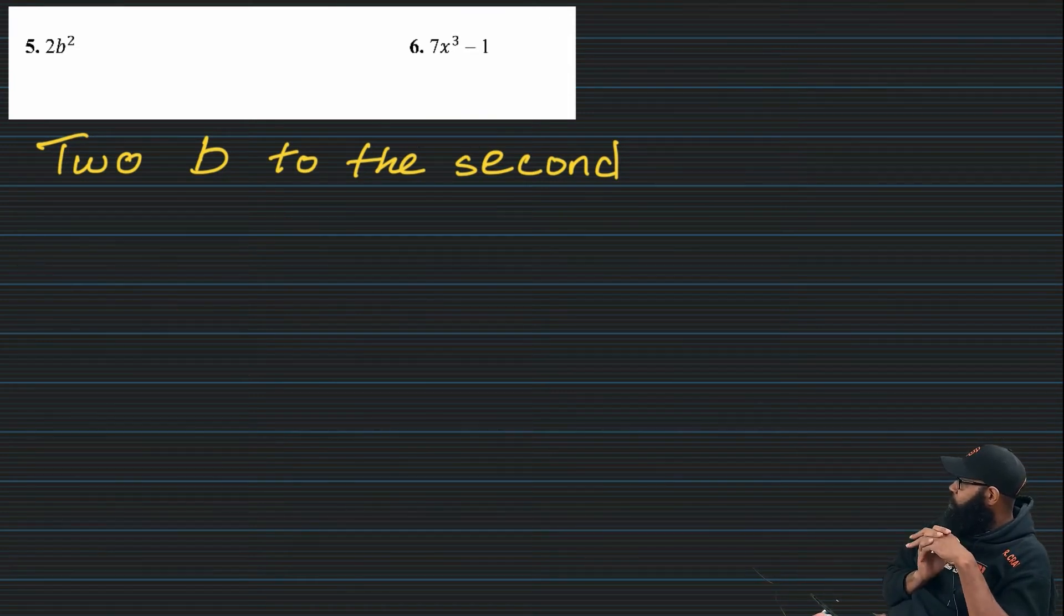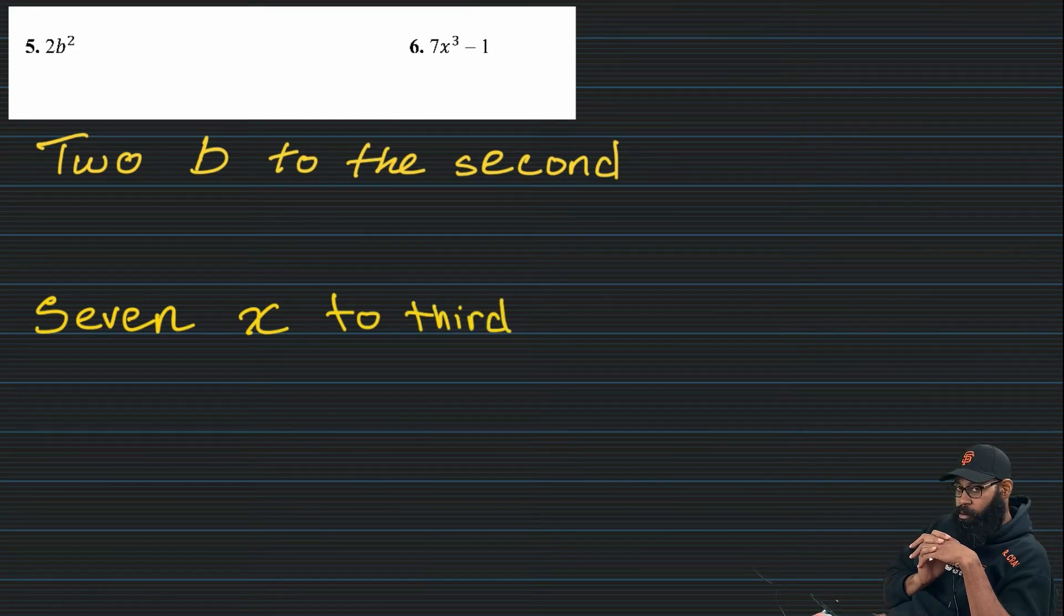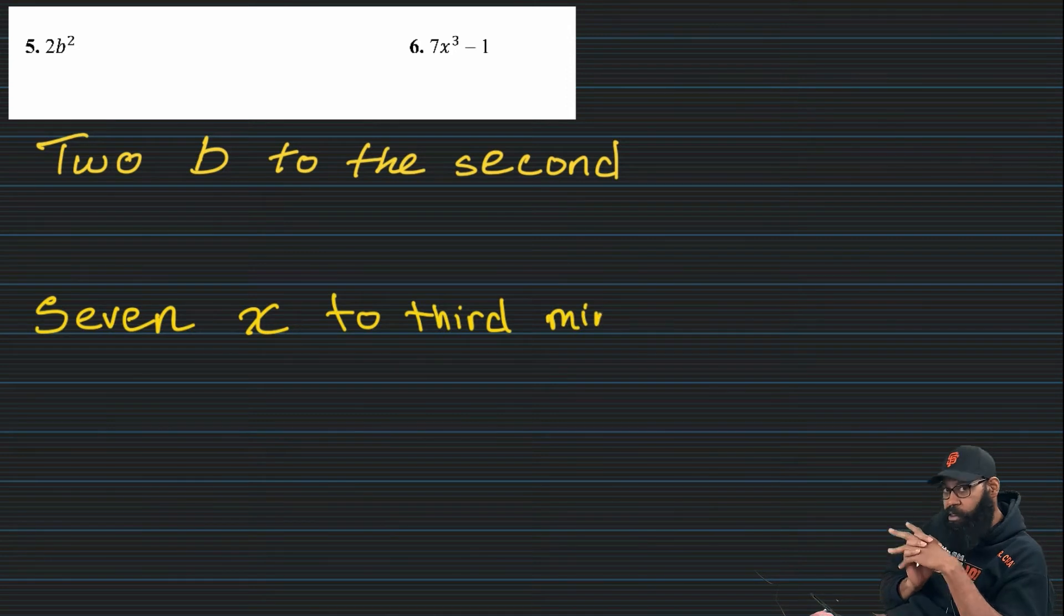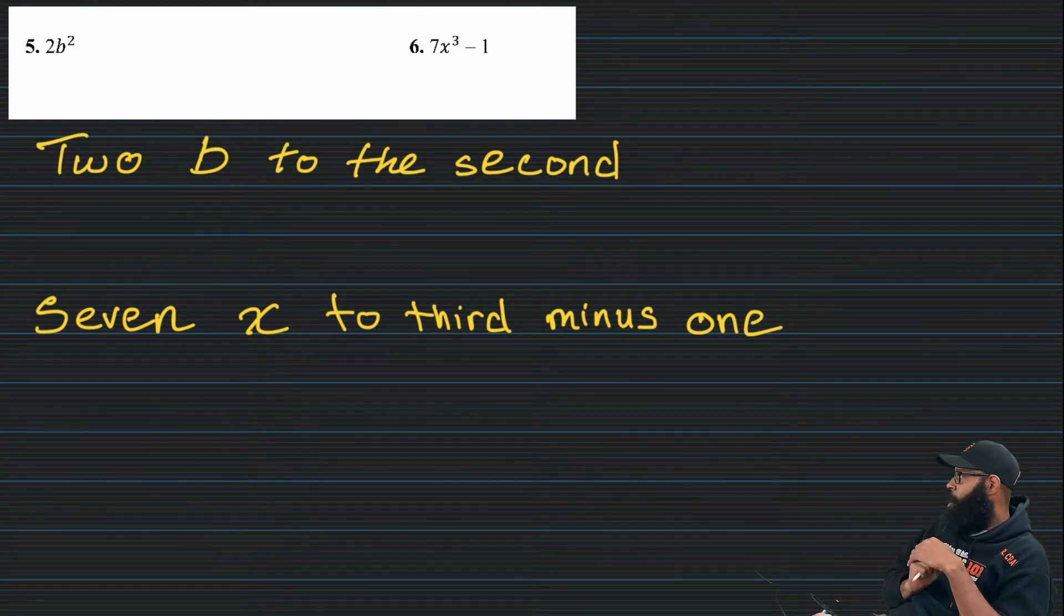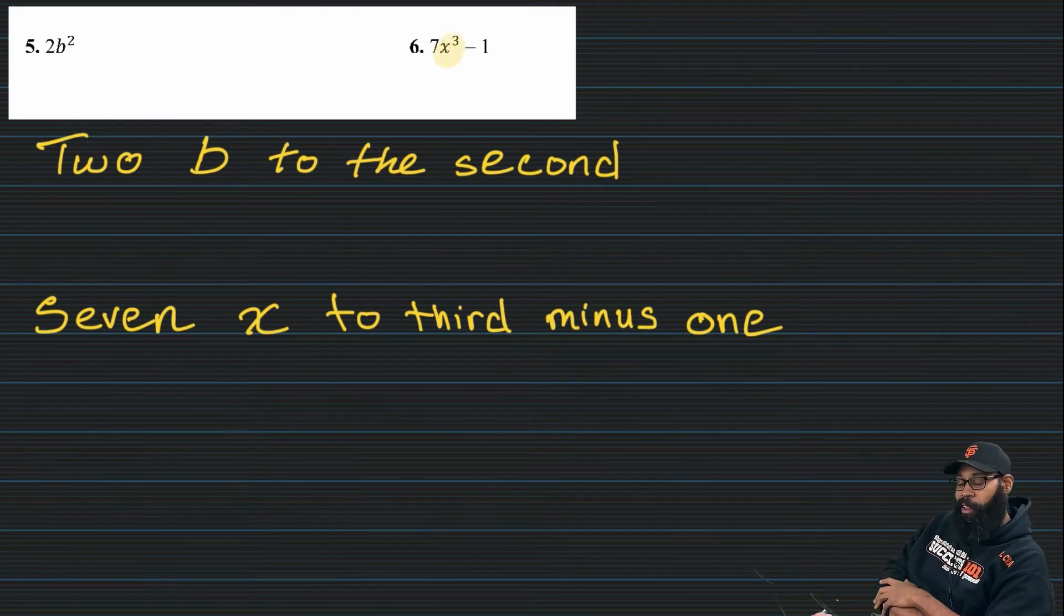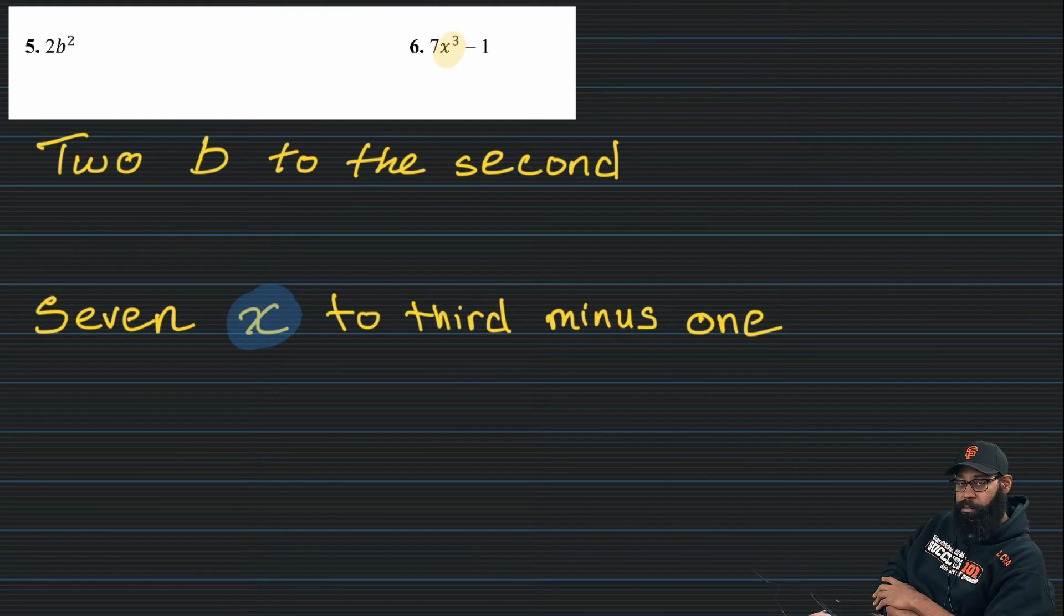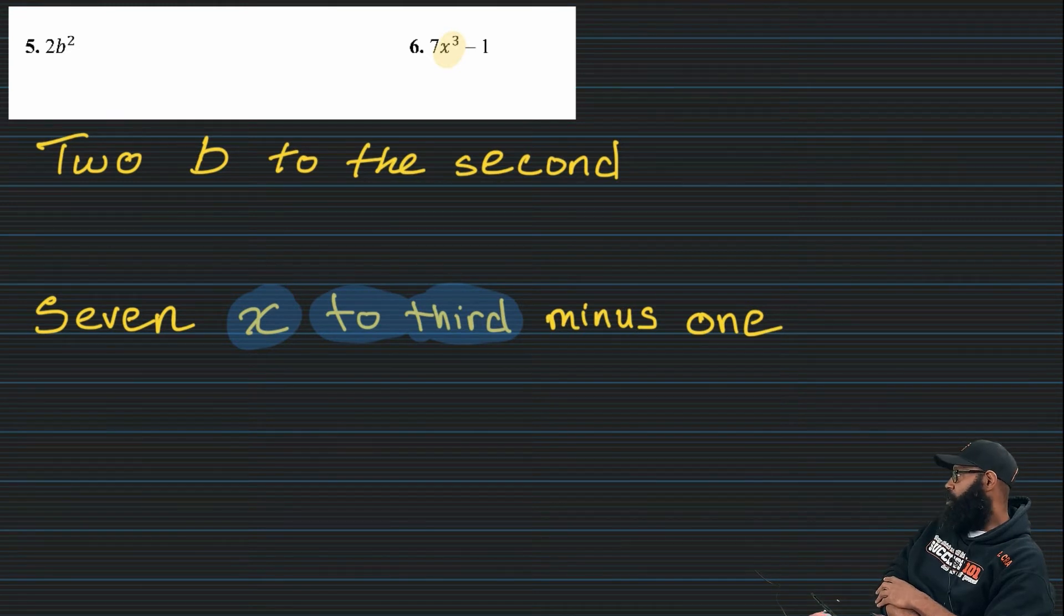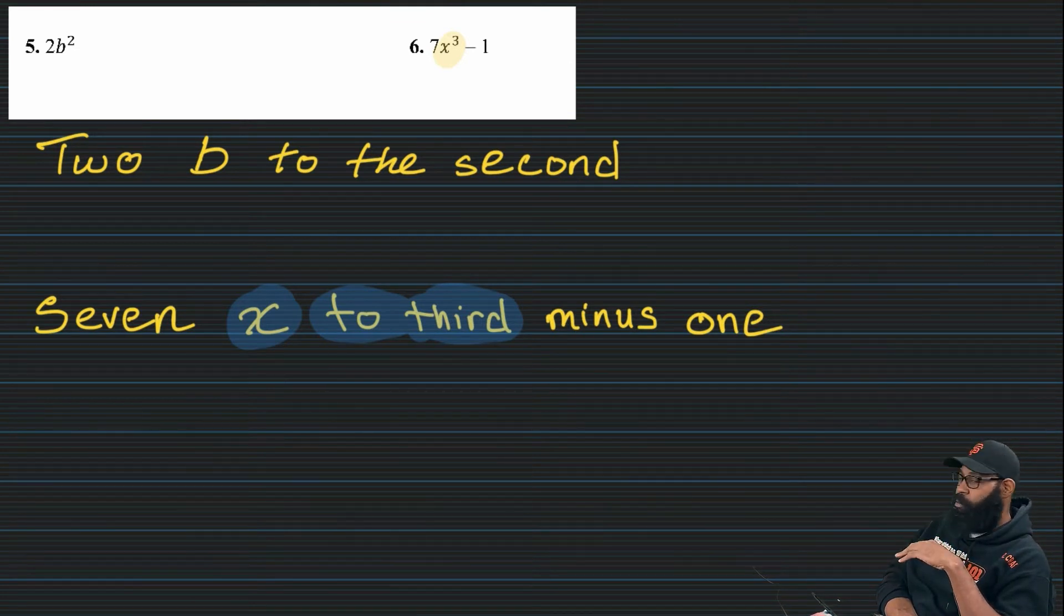Seven X to the third minus one. And again, being clear on seven X cubed. Well, I didn't write cubed. I write to the third. Because it's easy. Whether you're in third grade and you're watching this or whether you're in twelfth grade and you're watching this, we are clear that it's like you're in a grade. To the second, like second grade. To the third, like third grade. To the fourth, to the fifth, to the sixth. So, seven X to the third minus one. Or seven X to third minus one.